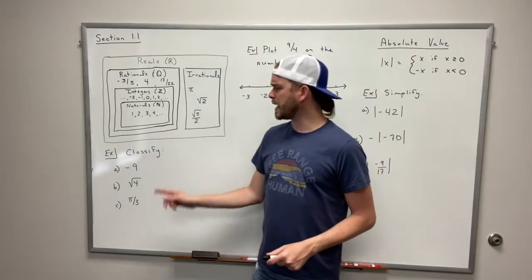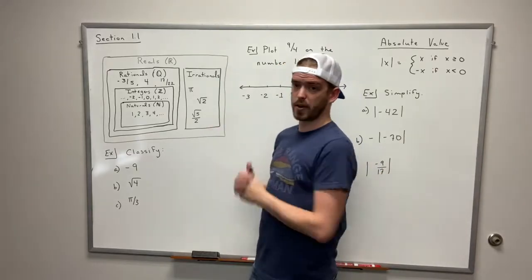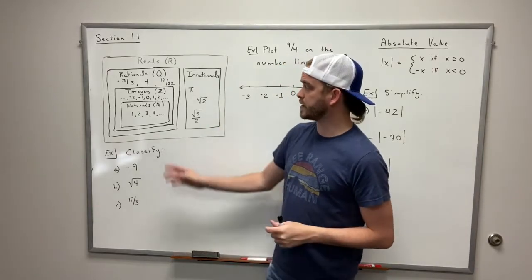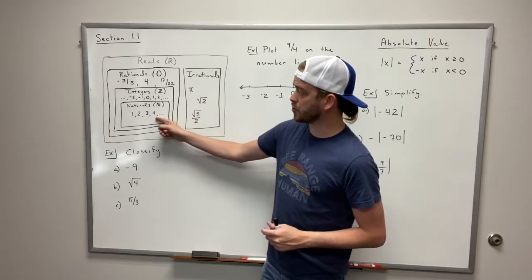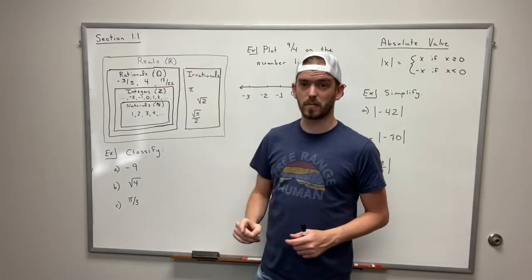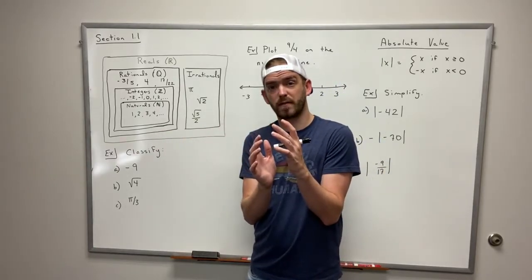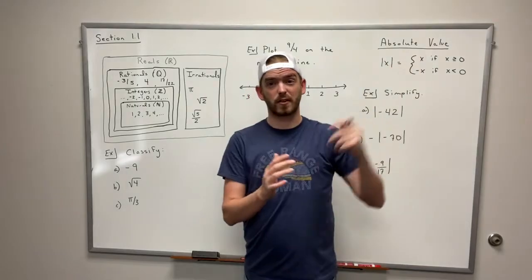So let's do an example. Let's classify some numbers and figure out what sets they are in. One thing that we want to point out is if it is a natural number that means it's also going to be an integer, a rational number, and a real number. So whenever we're classifying these we want to find the smallest subset that it fits into and then we're going to list everything on top of that.